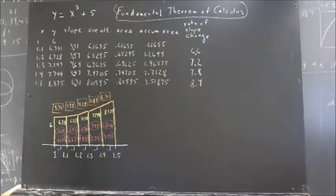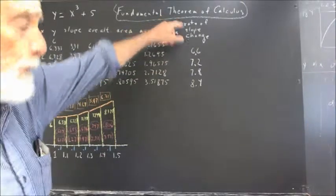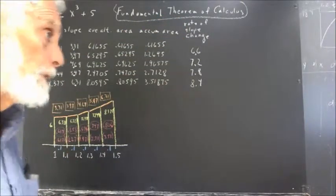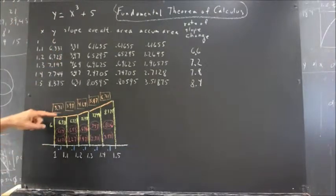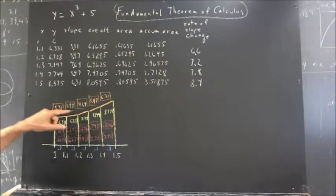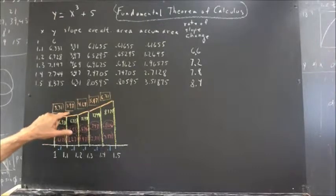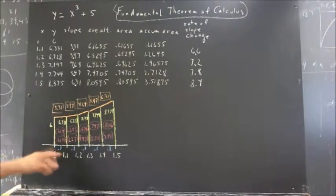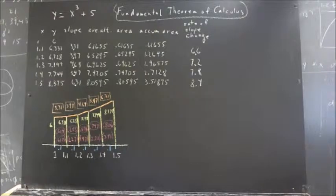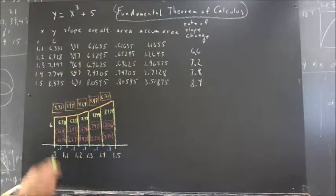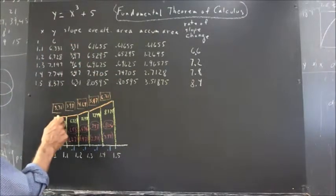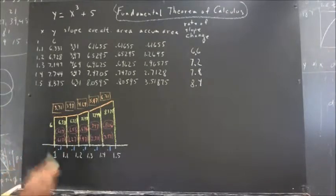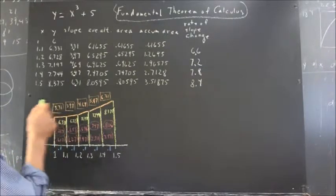Okay, so, what we have, then, is the standard trapezoidal approximation graph. I'm going to add the rates of slope change, and the rate of slope change is the change in the slope. In other words, from 3.31 to 3.97 is a change of 0.66. And we divide that by the width of the interval, and we get 6.6. And that's the rate at which slope is changing, the average rate at which the average slope is changing between this interval and this interval.